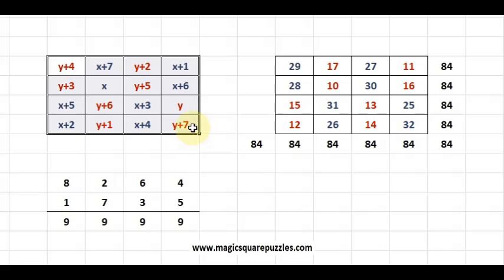There are 880 4 by 4 magic squares. This is the blueprint of just only one 4 by 4 magic square. Suppose if you put the x as 10 and y as 25, what you get?